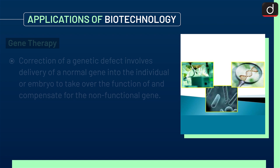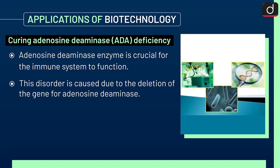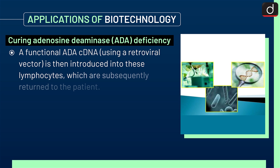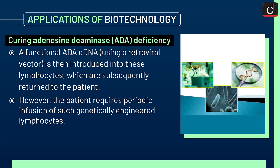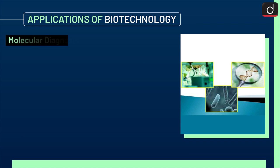Next is curing adenosine deaminase, i.e. ADA deficiency. The adenosine deaminase enzyme is crucial for the immune system to function. This disorder is caused due to the deletion of the gene for adenosine deaminase. Through gene therapy, lymphocytes from the blood of the patient are grown in a culture outside the body. A functional ADA cDNA using a retroviral vector is then introduced into these lymphocytes, which are subsequently returned to the patient. However, the patient requires periodic infusion of such genetically engineered lymphocytes. If the gene isolated from marrow cells producing ADA is introduced into cells at early embryonic stages, it could be a permanent cure.